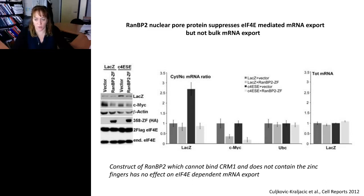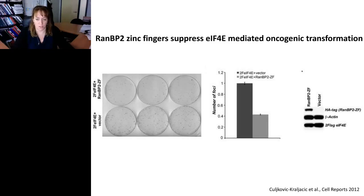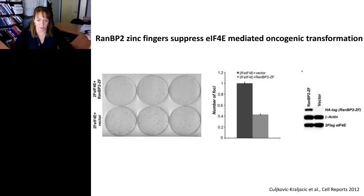What we can conclude is that the RAN-BP2 nuclear pore protein, which makes a cytoplasmic fibril, actually suppresses 4E-mediated RNA export but not bulk export. We presume that by reducing RAN-BP2 levels, 4E can transform cells more readily. Looking at cells overexpressing 4E plus RAN-BP2 versus cells only expressing 4E plus vector control, RAN-BP2 substantially suppresses 4E's oncogenic transformation activity simply by overexpressing this one fragment. Consistent with our model, suppressing the RNA export function also suppresses the transformation function.